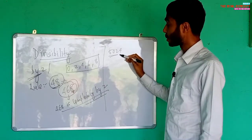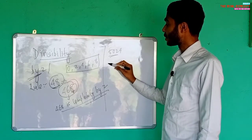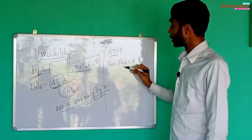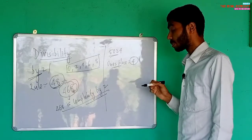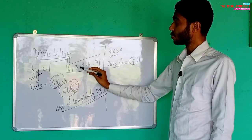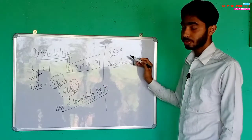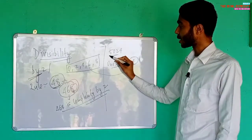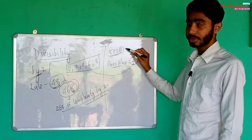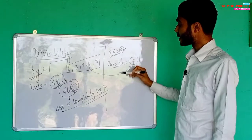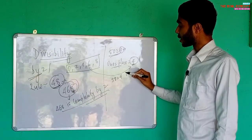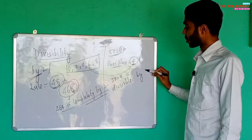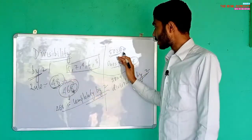Let's take another example: five thousand and twenty-four, that is 5024. We have to check whether this number is divisible by two or not. The ones place digit is four. As we know, zero, two, four, six, eight must be at the ones place. Since the ones place is four, we can say that 5024 is divisible by two.